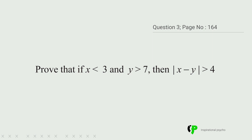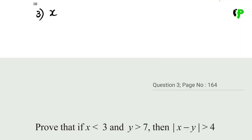This is the third question. The third question is similar. We have to prove that if x is less than 3 and y is greater than 7, then x minus y is greater than 4.